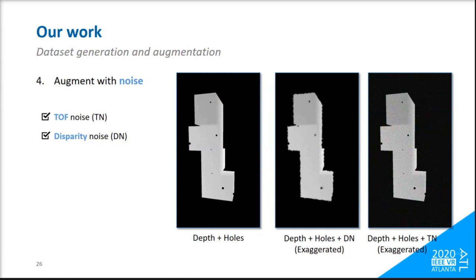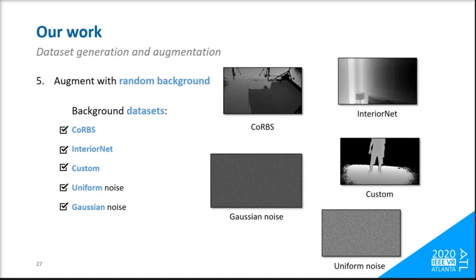Then we perform domain randomization by compositing our render on random backgrounds, selected from publicly available datasets or random distributions.